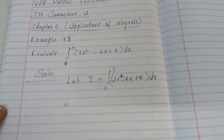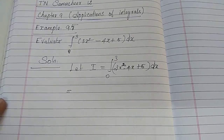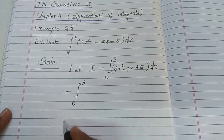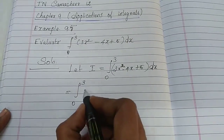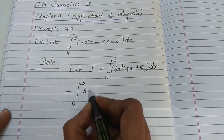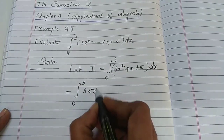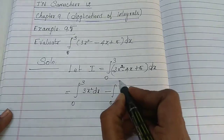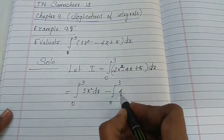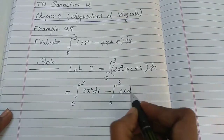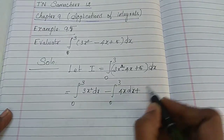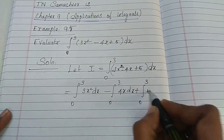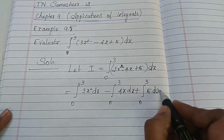Separate the integral first. For each term: put integral 0 to 3 of 3x squared dx, minus integral 0 to 3 of 4x dx, plus integral 0 to 3 of 5 dx.